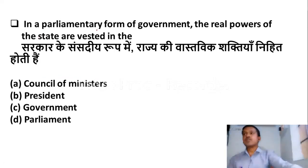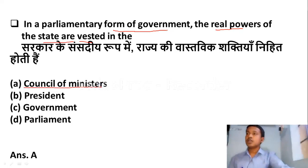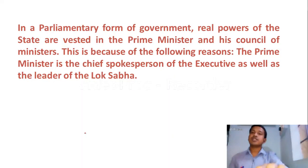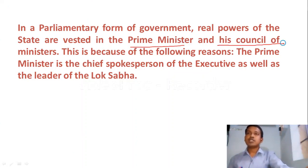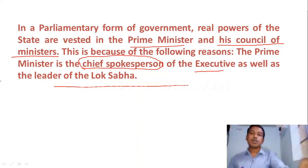The next question: in a parliamentary form of government, the real powers of the state are vested in — Option A: Council of Ministers. Option B: President. Option C: Government. Option D: Parliament. The right answer is Option A — Council of Ministers. In a parliamentary form of government, real powers of the state are vested in the Prime Minister and his Council of Ministers, because the Prime Minister is the chief spokesperson of the executive as well as the leader of Lok Sabha.